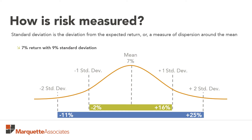Different asset classes have different expected means and standard deviations. The ultimate trade-off in any investing decision is risk versus return. If you want to pursue more return out of your portfolio, you need to take on more risk. The classic example is stocks versus bonds. Stocks on average have higher expected returns than bonds, but they also have higher expected standard deviation, or risk, than bonds.